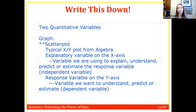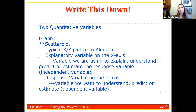Before we make our graph, we need to decide which variable is the response and which is explanatory. Sometimes there's a clear time order — whatever is the output or end result is the response variable, and whatever we're inputting or can change is the explanatory variable.